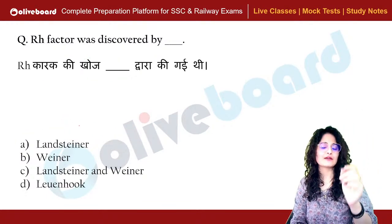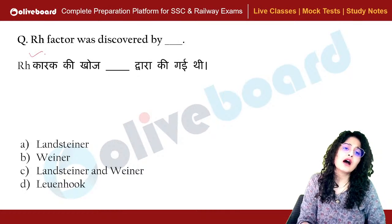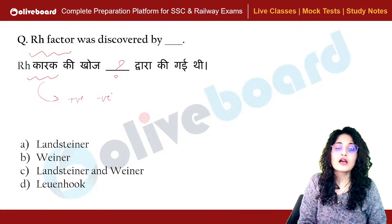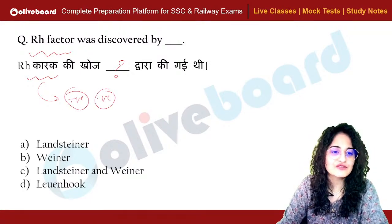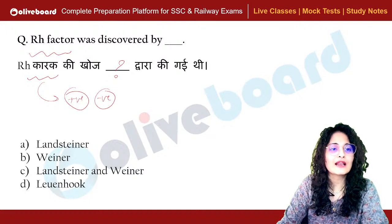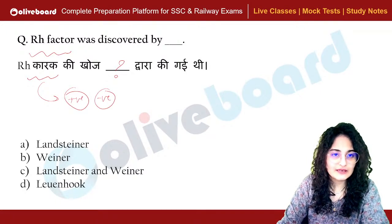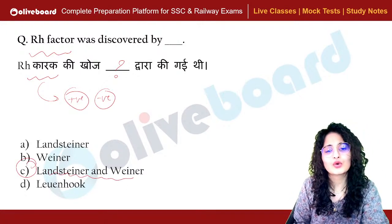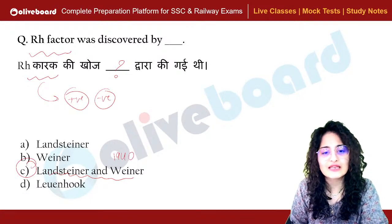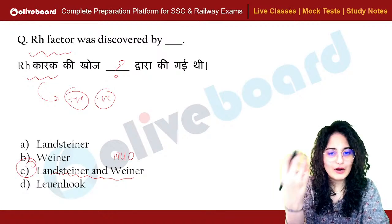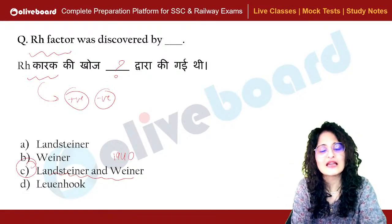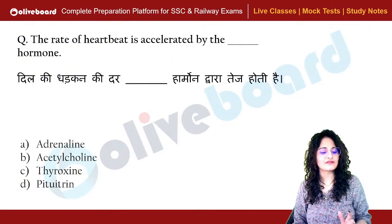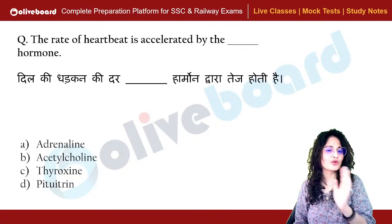What is the Rh factor in blood groups? When we call blood positive or negative, that refers to the Rh factor. It was discovered by Landsteiner and Wiener in 1940, using the Macacus Rhesus monkey. Based on whether the Rh antigen is present or not, blood is classified as positive or negative.